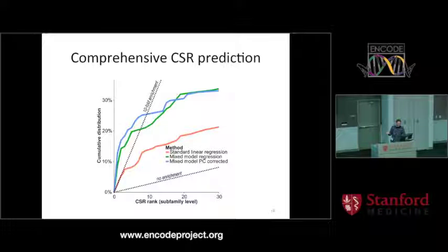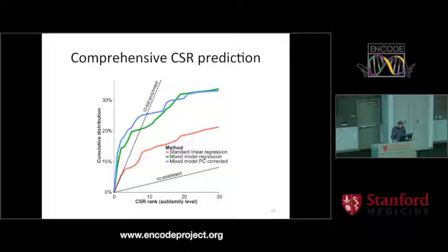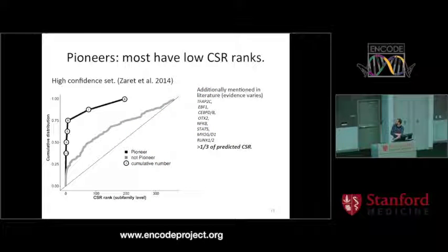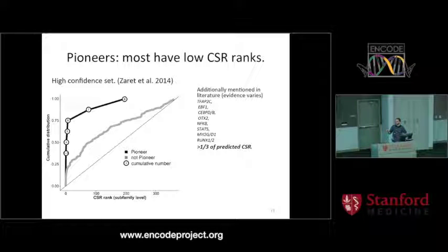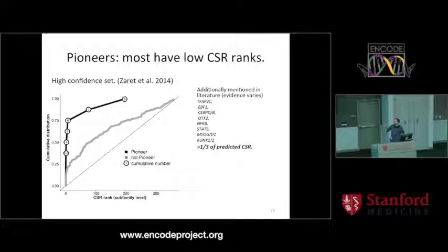If you do this comprehensively, you see heavy enrichment for the correct factors. With standard linear regression you already see enrichment, but with the mixed model approaches it really goes up. Another question is whether this is biologically relevant. The list you would hope to see enrichment in is pioneer factors. A high-confidence list of pioneer factors has been published, and you see very strong enrichment of these factors among the transcription factors with high motif accessibility scores. Many of the high-scoring factors not on that list also appear in the literature as potential pioneer factors. This approach provides interesting candidates for pioneer factor studies.